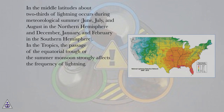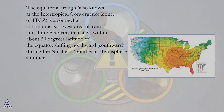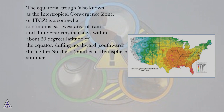In the tropics, the passage of the equatorial trough or the summer monsoon strongly affects the frequency of lightning. The equatorial trough, also known as the Intertropical Convergence Zone or ITCZ, is a somewhat continuous east-west area of rain and thunderstorms that stays within about 20 degrees latitude of the equator, shifting northward and southward during the northern and southern hemisphere summer.